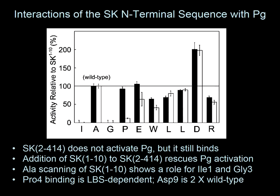We looked at the N-terminus of streptokinase in more detail. It's a simple experiment but hard to understand. We took the isoleucine off the N-terminus of SK and, lo and behold, it would not activate plasminogen conformationally at all. But then we added a peptide corresponding to SK residues 1 to 10, and that peptide rescues the otherwise dead form of streptokinase — though why it does that, we're not entirely sure.